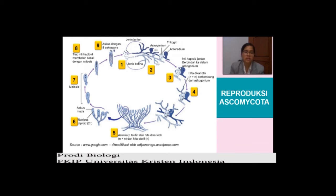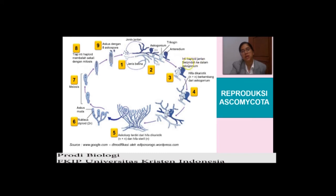Sebenarnya sama seperti Zygomycota, yang membedakan mungkin bentuknya saja. Untuk Ascomycota, jenis betinanya dinamakan askogonium, untuk yang jantan dinamakan anteridium. Kemudian nanti akan terjadi proses di mana inti haploid jantan akan berpindah ke dalam askogonium. Jadi intinya akan ke sel reproduksinya. Kemudian nanti hifa menjadi dikaryotik (N+N) dan berkembang dalam askogonium.